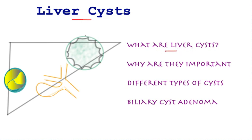A cyst is a sack full of fluid that has a lining, such as shown in this cartoon of the liver. If these are large enough they are a bit like a balloon inside the tummy, causing symptoms of fullness and difficulty in bending over. They are important because certain types of cysts do require treatment, and there are many different types.